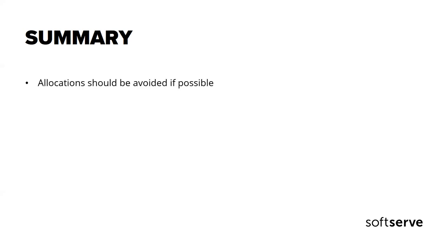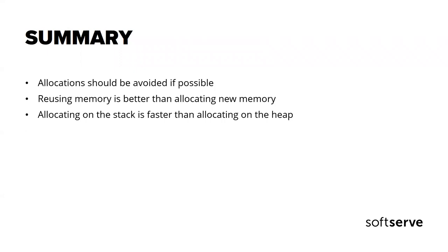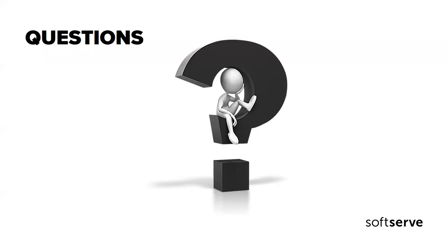Now we've looked at a few of the most common techniques to minimize the impact of garbage collector pressure on performance. Summarizing, all of the above optimizations make use of the following core concepts: allocation should be avoided if possible; reusing memory is better than allocating new memory; and allocating on the stack is faster than allocating on the heap. These are probably the most important concepts when it comes to garbage collector pressure. I'll be happy to answer your questions.